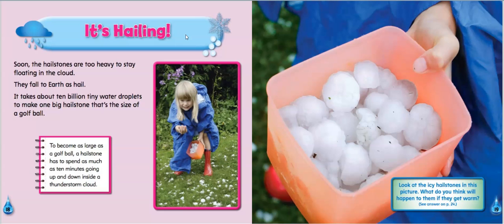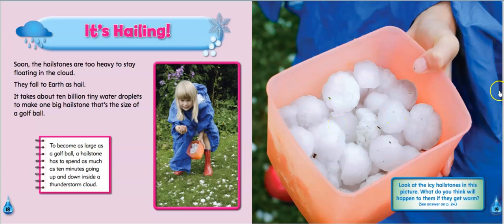It's hailing! Soon the hailstones are too heavy to stay floating in the cloud. They fall to earth as hail. It takes about 10 billion tiny water droplets to make one big hailstone the size of a golf ball. To become as large as a golf ball, a hailstone has to spend as much as 10 minutes going up and down, around, inside of a thunderstorm cloud. Look at the icy hailstones in this picture. What do you think will happen to them when they get warm? They're going to melt and be part of the water cycle again. Just so you know, I'm not saying a bad word — this is hail, H-A-I-L. Hailstone — it's a kind of weather.